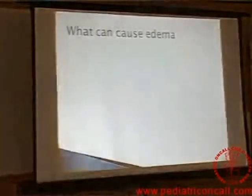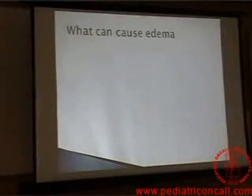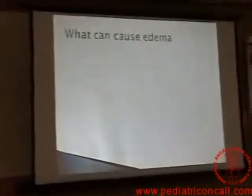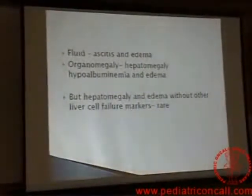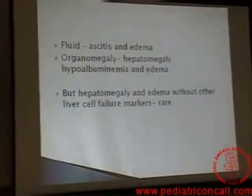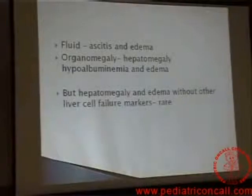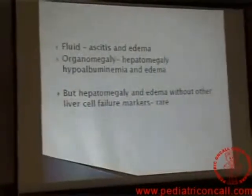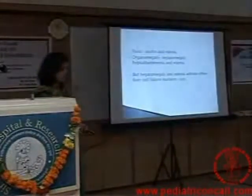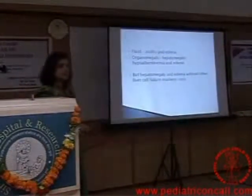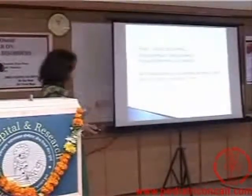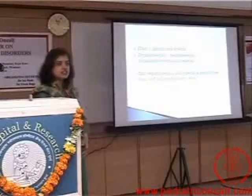So what can cause this edema? Low proteins. So why is he having low proteins? Either the fluid is ascites and there is edema because of low proteins, or there is organomegaly and low albumin causing edema. But usually if you are saying this is chronic liver disease with edema, he should have had other markers — like jaundice, or spider naevi. So all those are not there — just hepatomegaly, ascites, and edema.